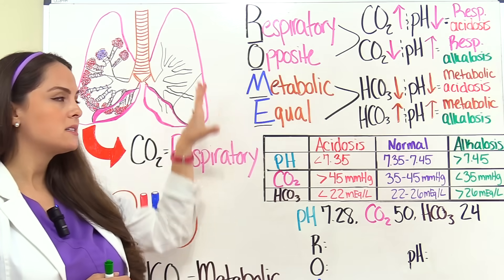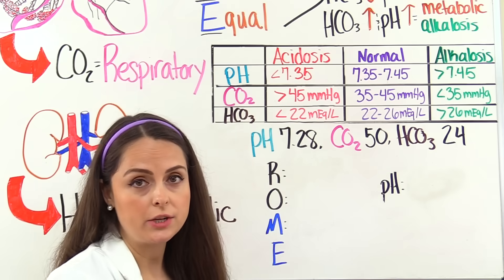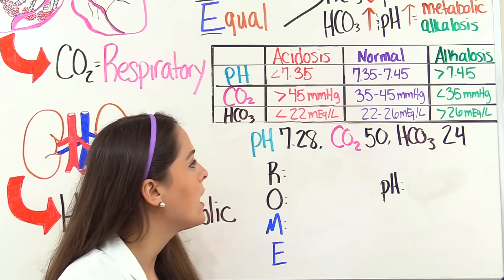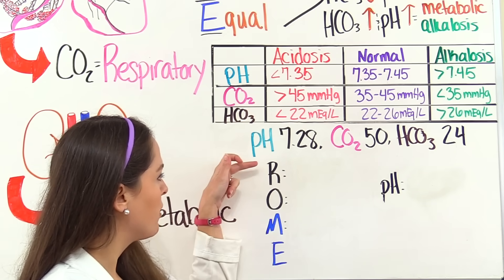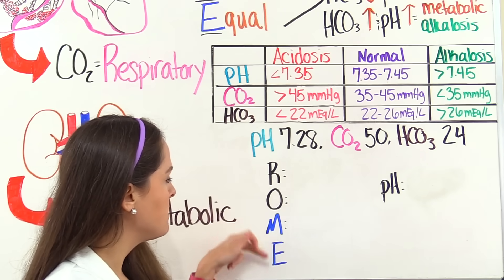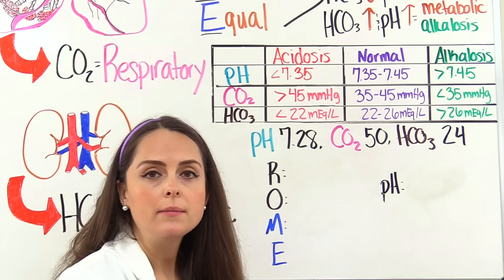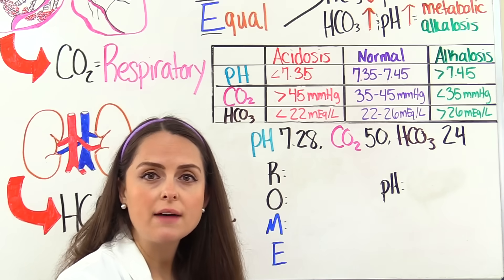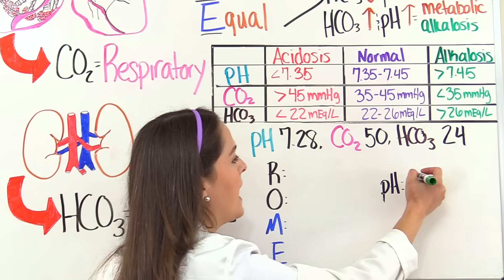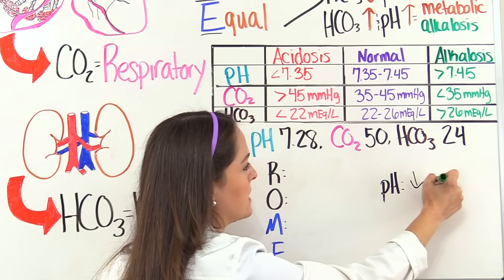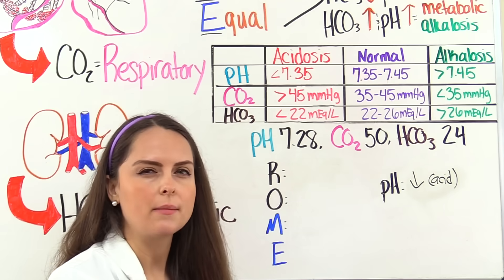So now let's take this method and work some problems. Problem one: blood pH is 7.28, carbon dioxide level is 50, and bicarb level is 24. I've set up the problem and written out ROME — respiratory opposite, metabolic equal — and I have our blood pH. Normal blood pH is 7.35 to 7.45. We're at 7.28, so we're on the low side — it's abnormal and considered acidotic. I'm going to put a down arrow and write 'acid' to remember that.